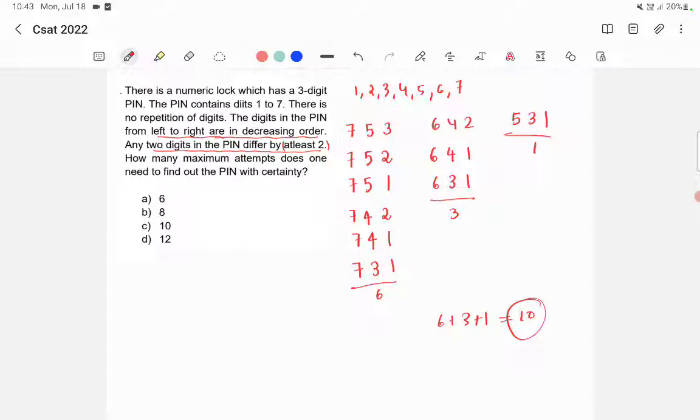In order to find out the PIN, maximum we need to do 10 attempts. Because let's say 531 is the actual PIN, so first I am going and typing 753, then 752, then 751, 742, so in this way I need to attempt 10 times to find out the correct PIN. So that is the maximum attempts. Maximum attempt is 10, so option C is the correct answer.